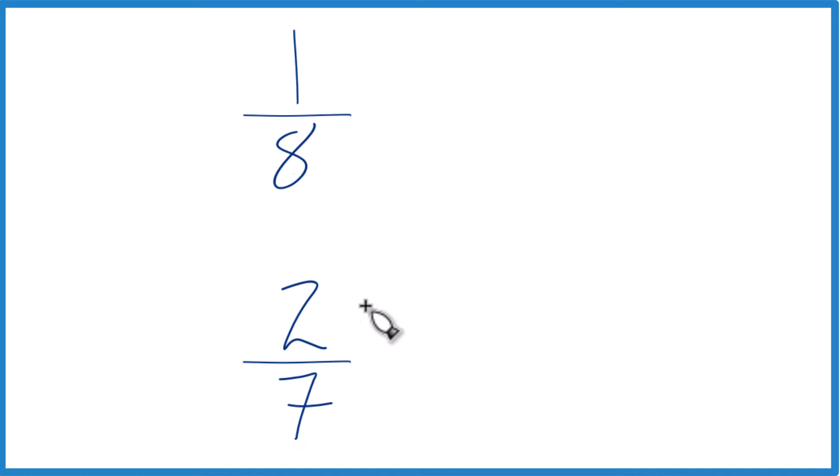Probably the easiest way to do this is take 8 and multiply it by 7 here, and that would give us 56. Down here, we can multiply 7 times 8, and that would give us 56.